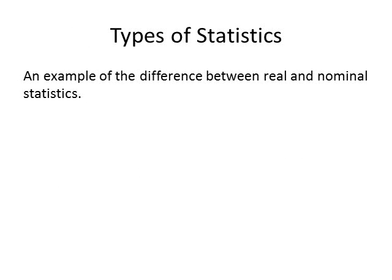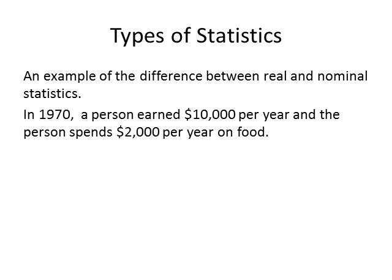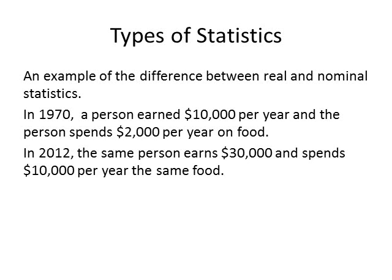Let's take an example of a person who works and uses some of their income to buy food. In 1970, a person earned $10,000 and spent $2,000 per year on food. The person's nominal income is $10,000 and the nominal cost of food is $2,000. Next, we revisited the person in 2012 and discovered that they are now earning $30,000 and spending $10,000 on the same food products as in 1970.